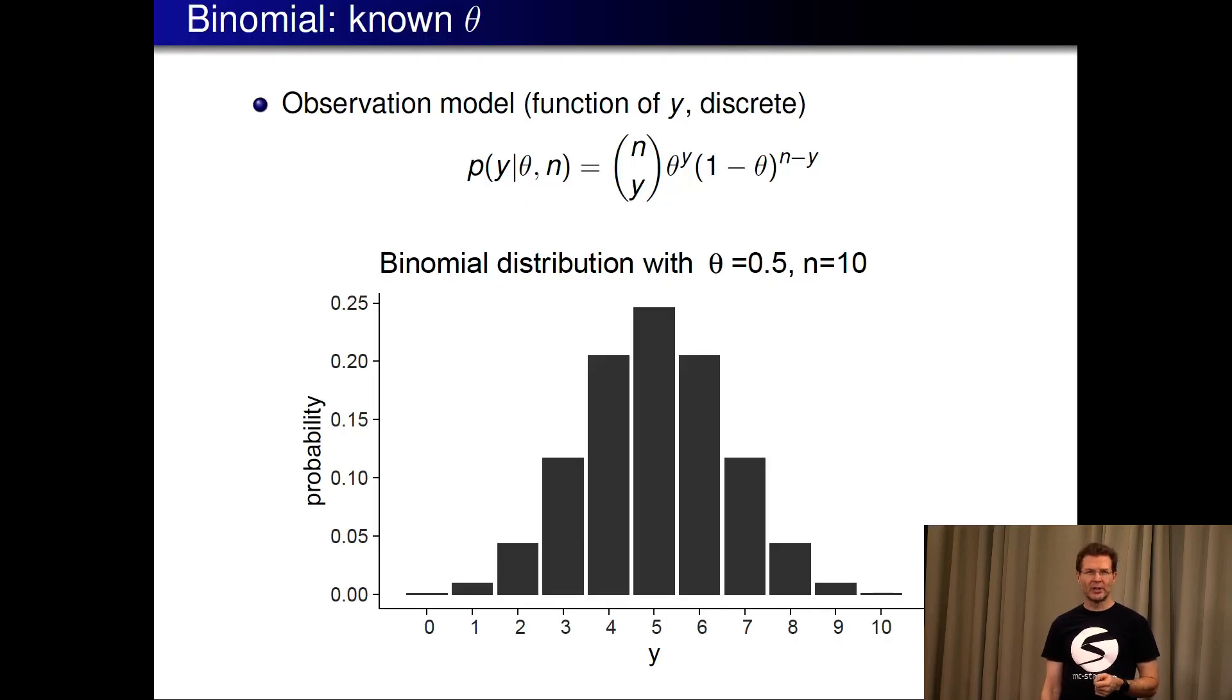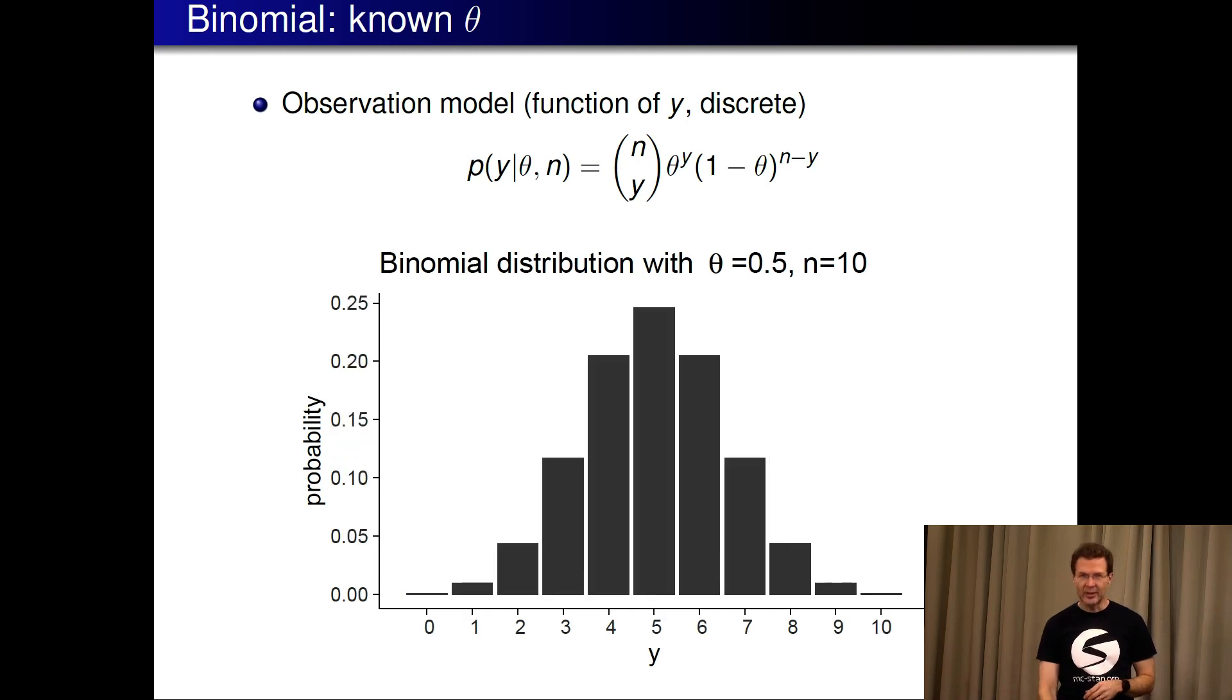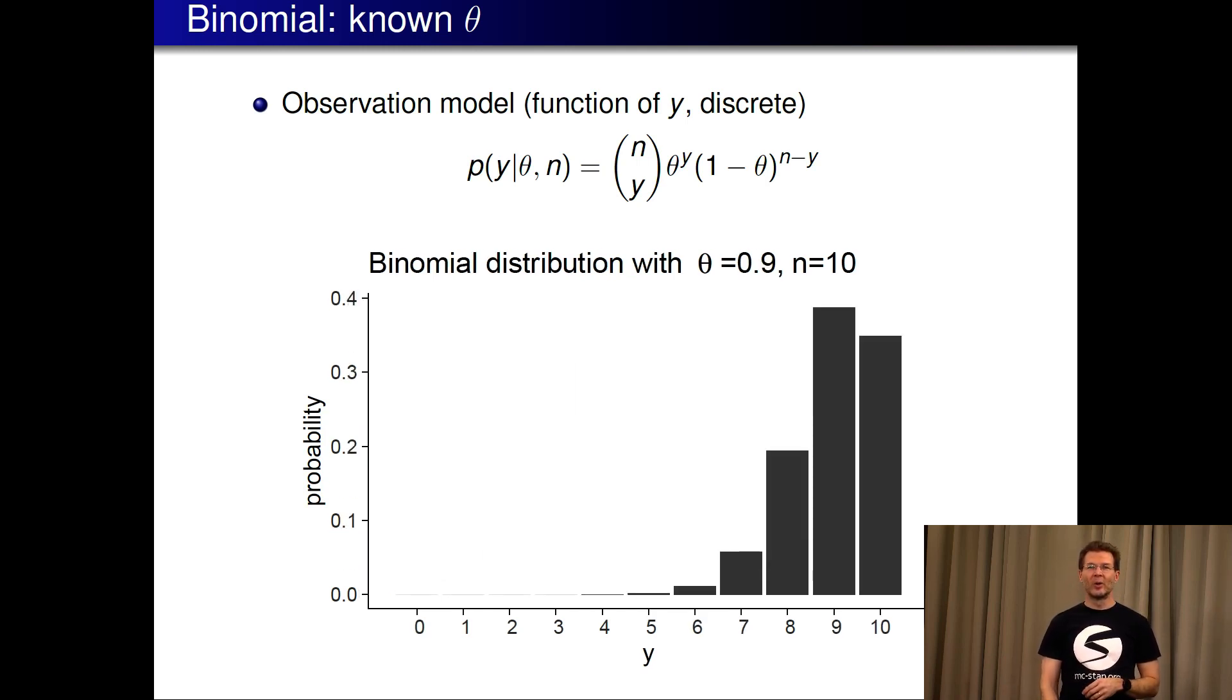You can look at what is the height of the bar here for the eight, or what is the bar height here for the eight. We can see that it's more likely that theta would be 0.9. Instead of just comparing these two options, we can compute how likely eight red chips would be for each possible theta.